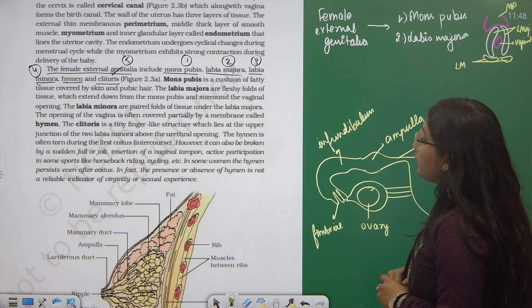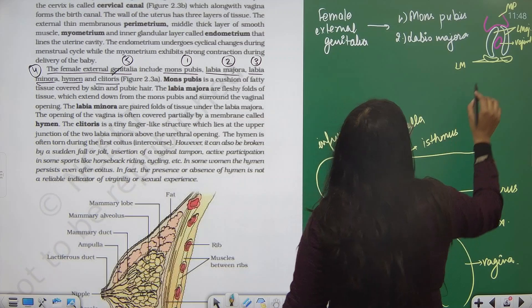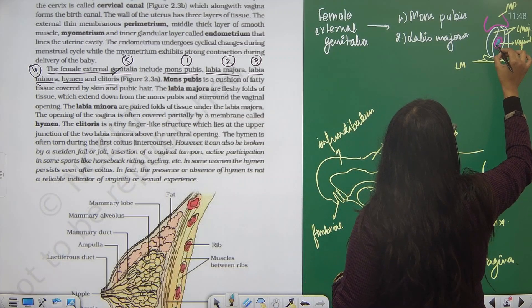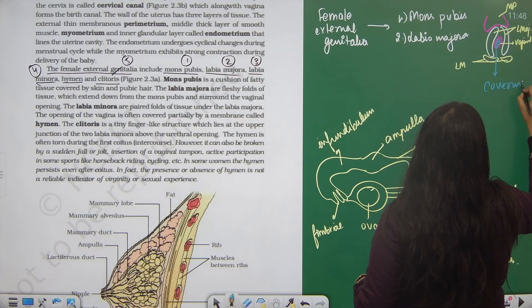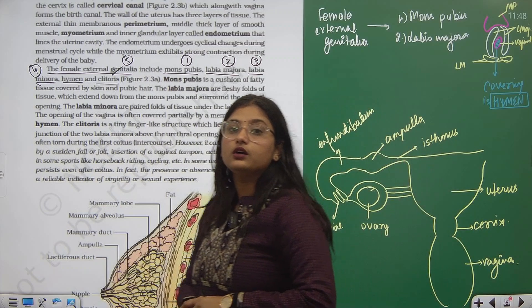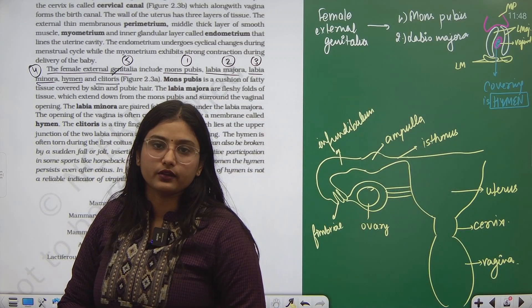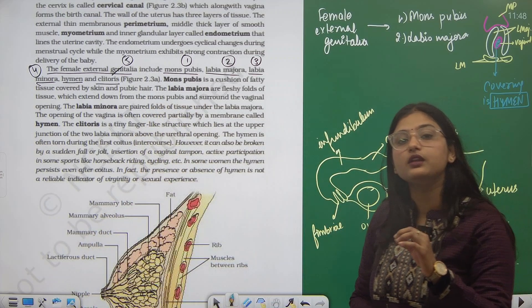The opening of vagina is often covered partially by a membrane called hymen. This covering is actually known as hymen, which some people consider an indicator of virginity, but actually there is nothing such.